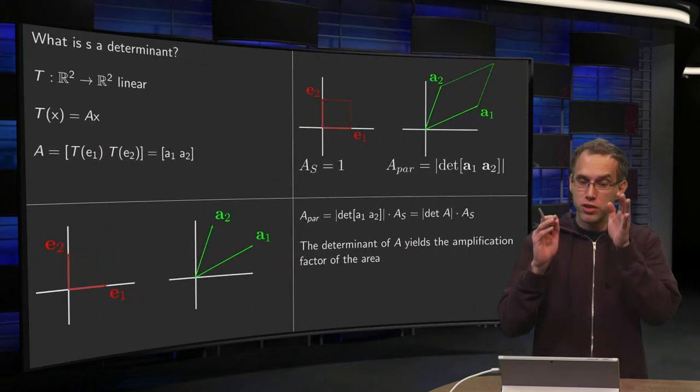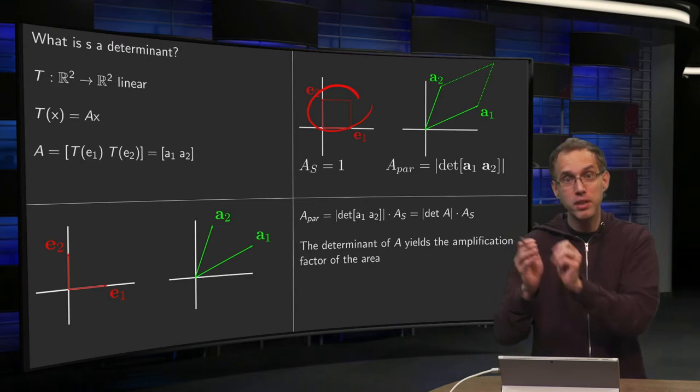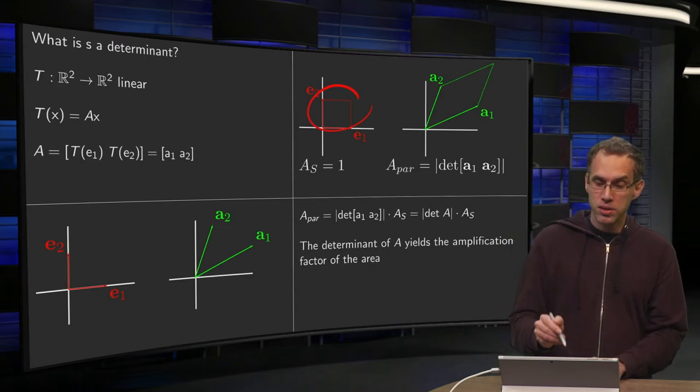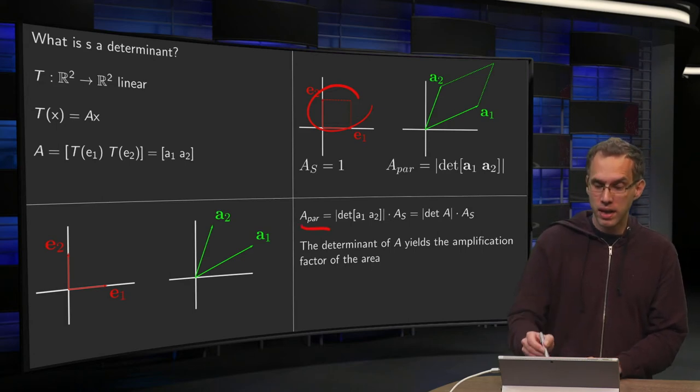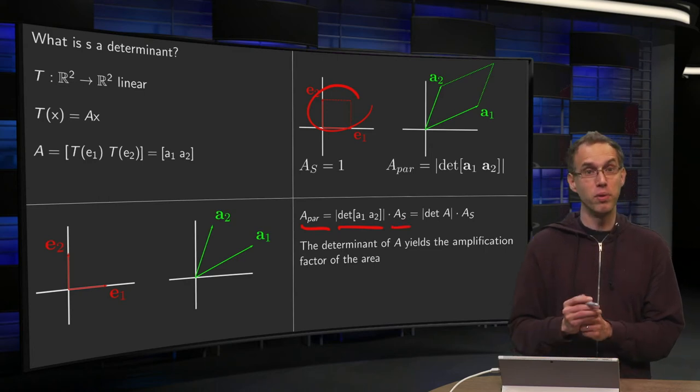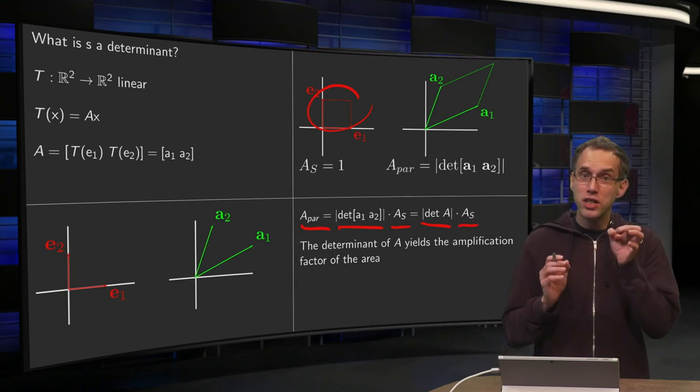So, we start with an area of 1, over here, and then our image has an area of the determinant of A. So, the area of our parallelogram is the determinant of A1 and A2 times, actually, we can put a 1 here. So, it equals the modulus of det(A) times the area of our square.